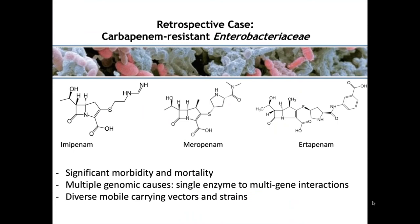In parallel, my lab does functional studies with these organisms to understand the drivers that promote conjugation or transposition that enable further spread of resistance genes. We warehouse this combined information locally and deposit it into national databases, specifically NCBI. Everything I'm going to talk about with patient strains are publicly available datasets within NCBI in the pathogen detection resources. I'm going to talk about some of our studies looking at carbapenem-resistant Enterobacteriaceae. These are three carbapenem antibiotics — imipenem, meropenem, and ertapenem. These pathogens cause significant morbidity and mortality, and it's not uncommon to see multiple genomic causes of resistance, including sometimes two to six gene interactions producing functional resistance.